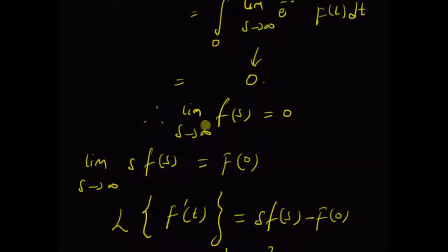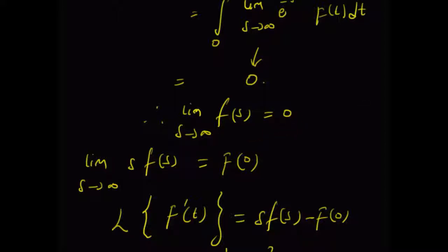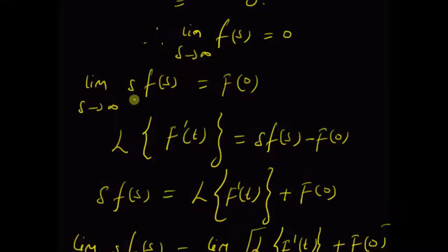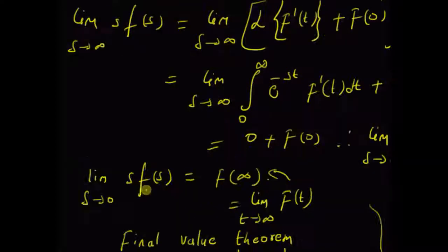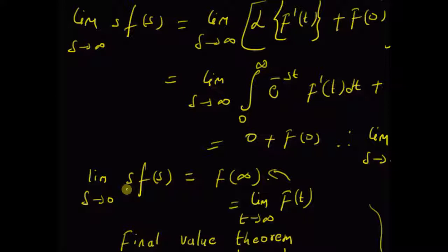To summarize: the limit of the Laplace transform as s tends to infinity equals 0; the limit of s times the Laplace transform as s tends to infinity equals the initial value of the function — this is the initial value theorem; and the limit as s tends to 0 of s times the Laplace transform equals the final value of the function, that is f(∞) — this is the final value theorem.